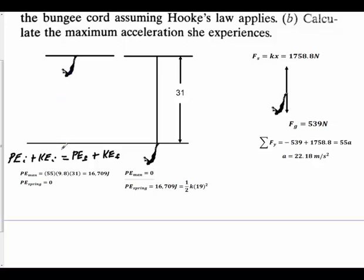We take her mass, which is 55 kilograms, we multiply by 9.8 times the height distance, which is 31. That gives us 16,709 joules. Initially I have 16,709 joules. According to the law of conservation of mechanical energy, I must have 16,709 joules here.